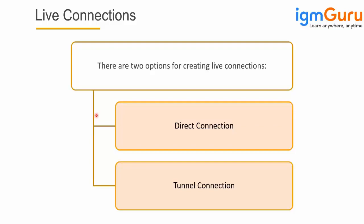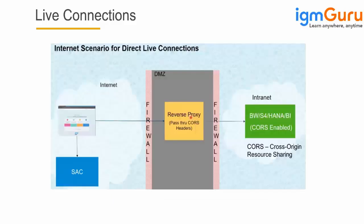There are two ways to create a live connection: one is direct connection and the other is tunnel connection. Customers mostly use direct connections. A direct connection means you have your on-premise or cloud system in the customer location, and you create a connection using the CORS mechanism — the Cross-Origin Resource Sharing mechanism — which is a specific mechanism to connect systems, and it is configured in the firewall itself.